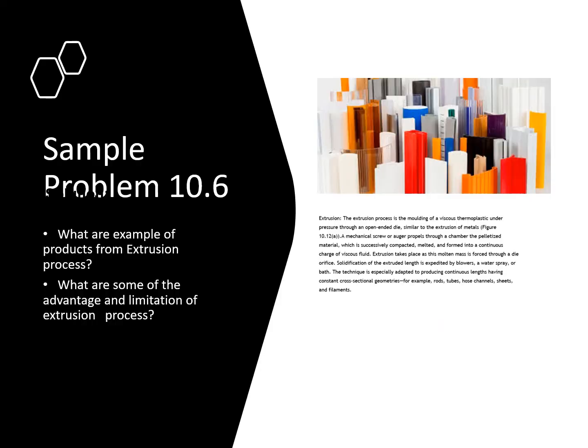A sample problem asks about examples of products from extrusion. Looking at the image gives some ideas of what types of products can be produced by extrusion. You should also be able to list the advantages and limitations of extrusion compared to other processes. For this kind of question, further reading is required — you can refer to the e-book chapter from the Callister textbook or other sources available online.